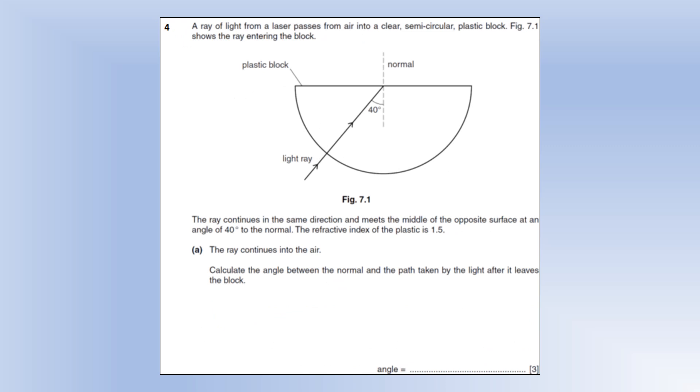So a ray of light from a laser passes from air into a glass block. Okay, the ray continues in the same direction and meets the middle of the opposite surface at an angle of 40 degrees to the normal. The refractive index of the plastic is 1.5. Okay, so the ray continues into the air. Calculate the angle between the normal and the path taken by the light after it leaves the block.